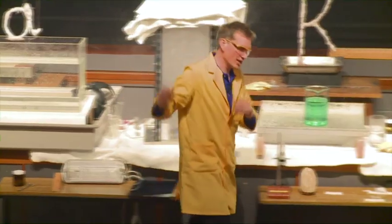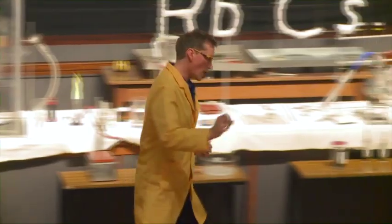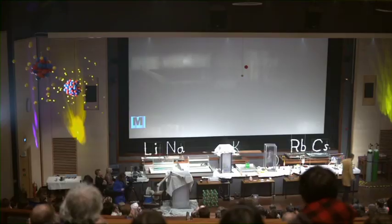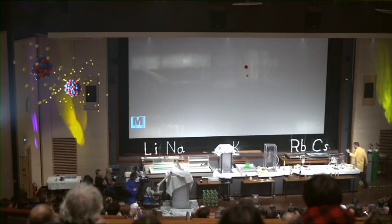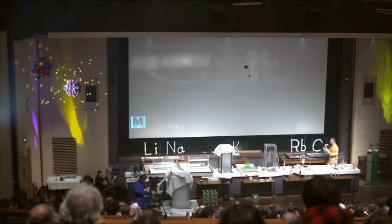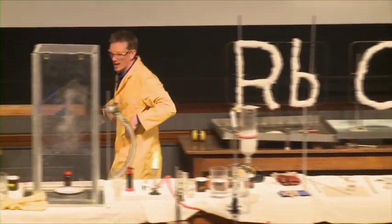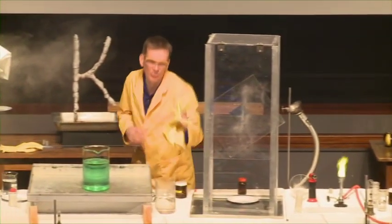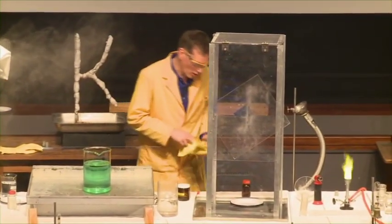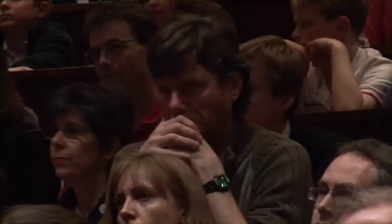Potassium reacts with iodine to form potassium iodide. But in this case, the iodine, unlike the chlorine, is a solid. So it's a little bit easier for us to show this reaction — we don't have lots of poisonous chlorine gas going everywhere.